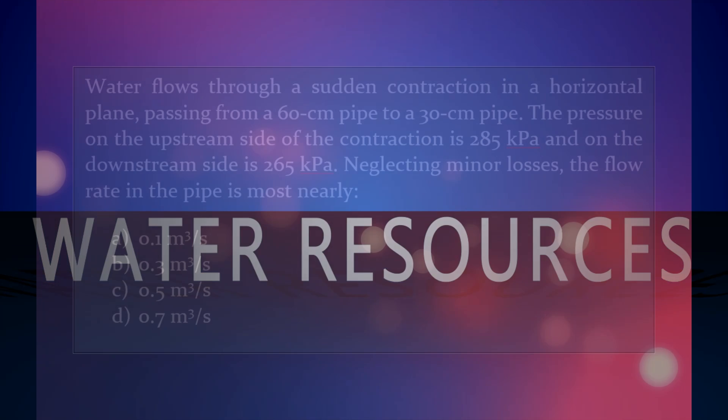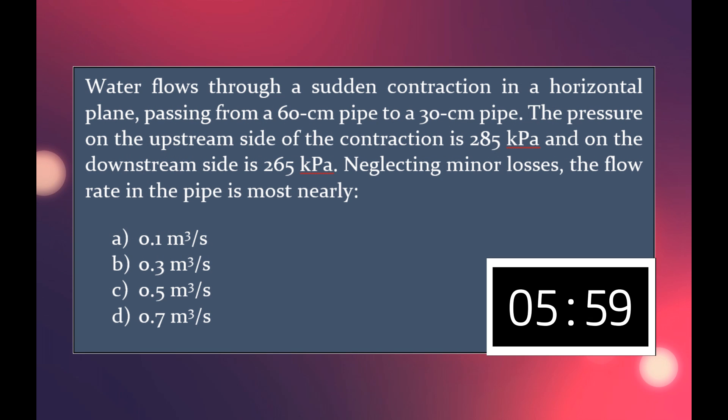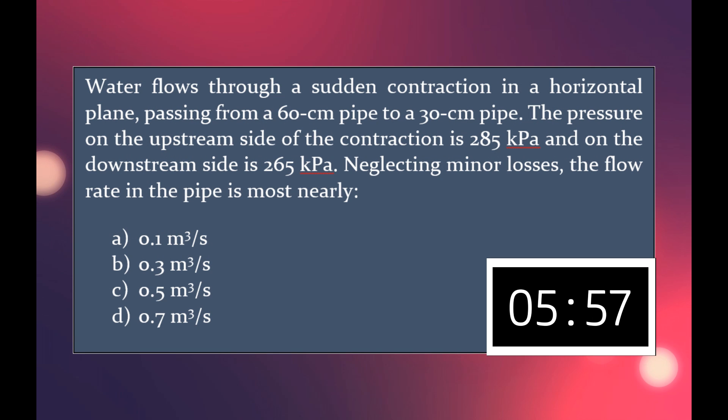Today's problem is from Water Resources and it states, water flows through a sudden contraction in a horizontal plane passing from a 60 centimeter pipe to a 30 centimeter pipe. The pressure on the upstream side of the contraction is 285 kilopascals and on the downstream side is 265 kilopascals. Neglecting minor losses,